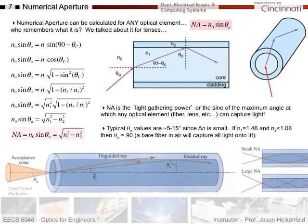Numerical aperture is the light gathering power or the sine of the maximum angle at which the optical element—fiber, lens, or anything—can capture light. For a fiber, typical theta_a values are 5 to 15 degrees since Δn is small. If you have a fiber which is glass, around 1.46 for the refractive index for the core, and if the cladding has a refractive index less than 1.06, then theta_a equals 90 degrees, meaning a bare fiber in air will capture light at all angles onto it.